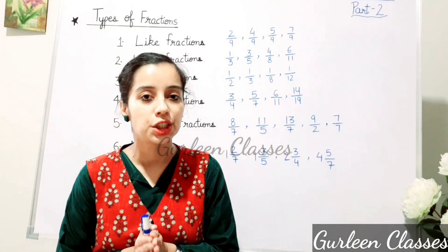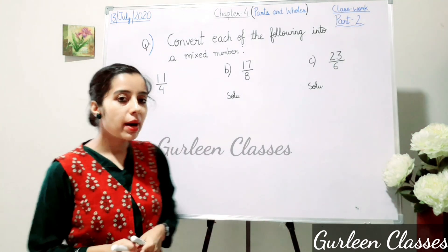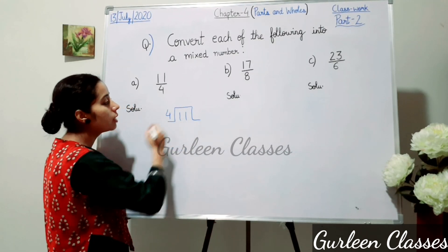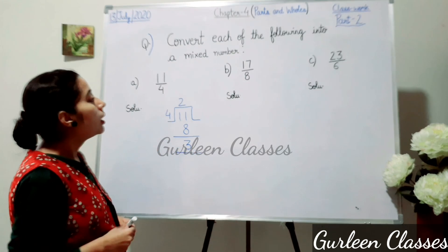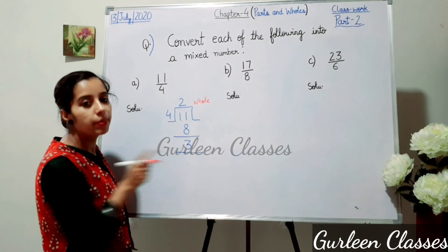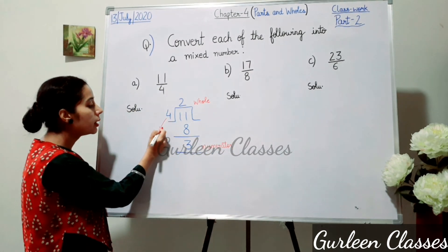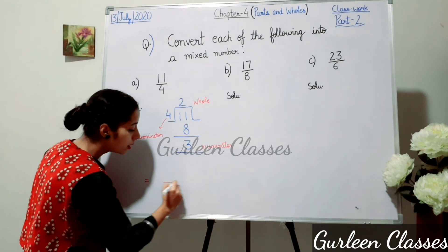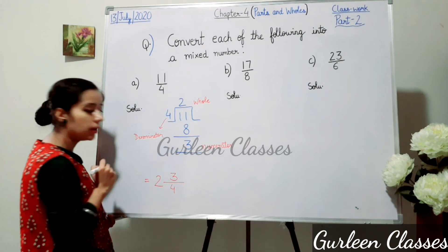So students, I hope the different types of fractions are clear. Now let us do a question: convert each of the following into a mixed number. Part A: 11/4. So divide 11 by 4 — 4 twos are 8, remainder is 3. So the quotient 2 will be our whole, remainder 3 will be the numerator, and 4 will be the denominator. The answer is 2 whole 3/4.